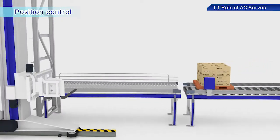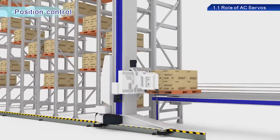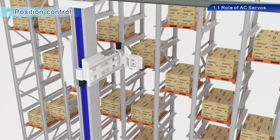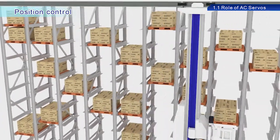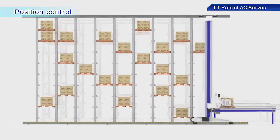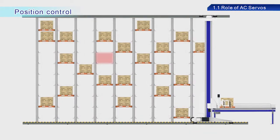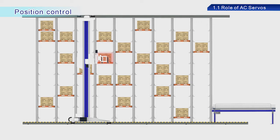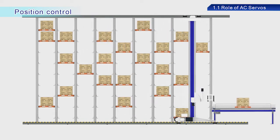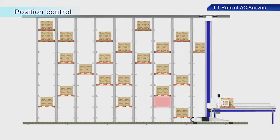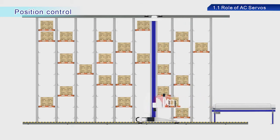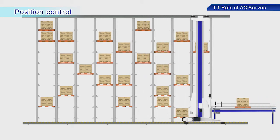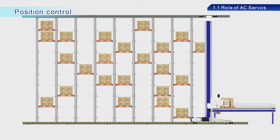Let's go over position control first. Position control is used, for example, with vertical conveyance equipment in warehouses. Objects must be transported and organized to specific locations or positions in warehouses. AC servo position control provides the ability to transport objects accurately to specific locations or positions.